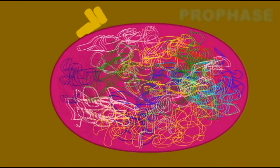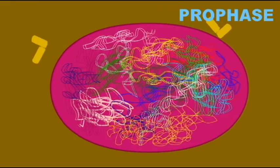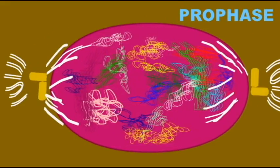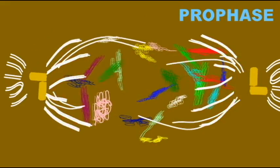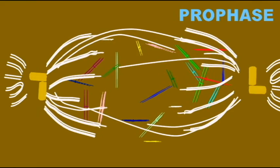Once the centrioles move to opposite poles of the cell, they serve as organizing centers for the microtubules, which form the spindle apparatus of mitosis.